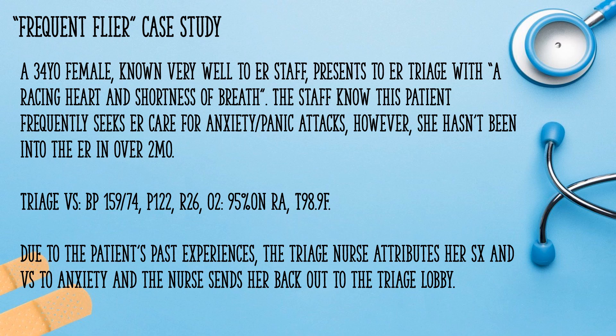Follow along on your worksheet. This is the Frequent Flyer case study. A 34-year-old female known very well to ER staff presents to ER triage with a racing heart and shortness of breath. The staff know this patient frequently seeks ER care for anxiety and panic attacks. However, she hasn't been to the ER in over two months. Her vital signs are: blood pressure 159 over 74, pulse of 122, respirations 26, oxygen 95% on room air, temperature 98.9 Fahrenheit. Any concerns at this point? Due to the patient's past experiences, the triage nurse attributes her symptoms and vital signs to anxiety, and sends her back out to triage.